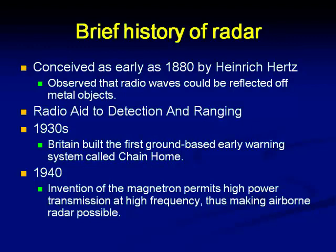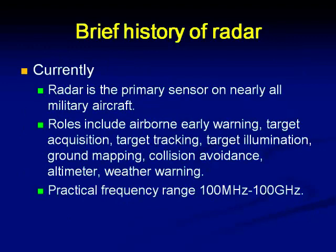Before we go into the details, it's worthwhile to know the history of radar. The idea was conceived as early as 1880 by Henry Hertz, who suggested that radio waves could be reflected off metal objects. Britain built the first ground-based early warning system called Chain Home in the 1930s. By the 1940s, a high-power microwave source called the magnetron could be invented. Using this, people were able to send signals to far-off distances and get echoes, and by World War II the radars became a normal measuring system for most military applications.